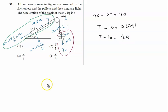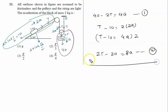Now to calculate the value of a, we multiply this equation by 2. From equation 1: 2T minus 20 equals 8a. This is equation 2. Adding both equations, 2T and 2T cancel, 40 minus 20 equals 20, and 8 plus 4 equals 12a, so a equals 20/12.